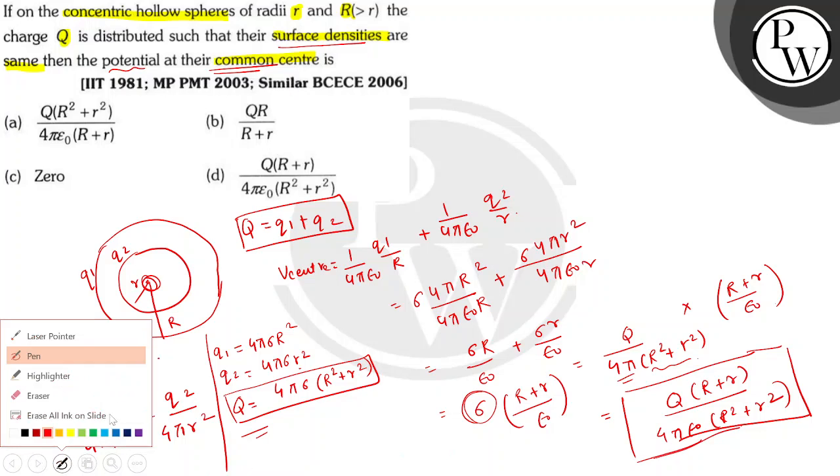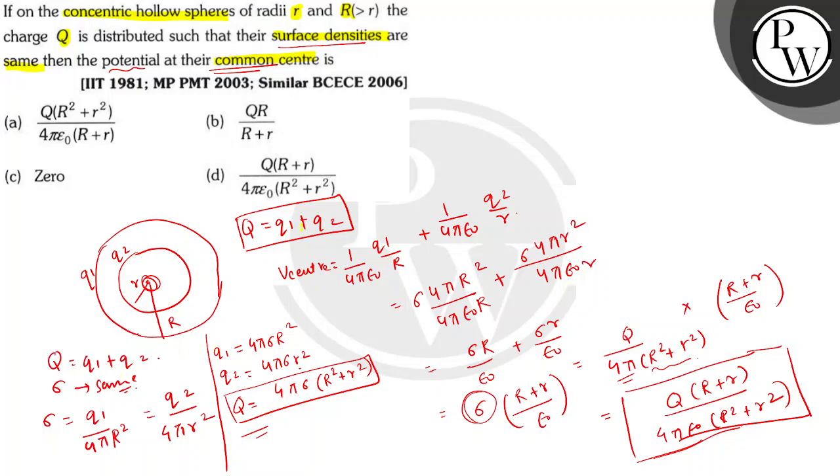So the correct option is Q times R plus r upon 4π epsilon 0, capital R square plus small r square, that is D. I hope you all understood this well. All the best!